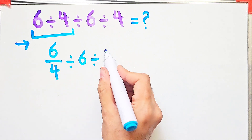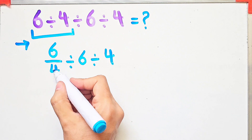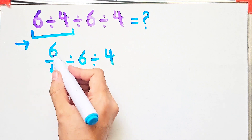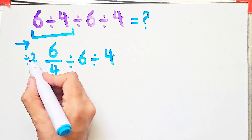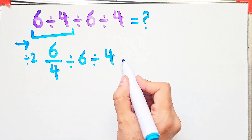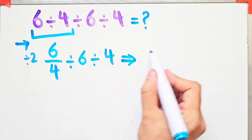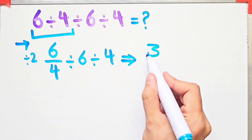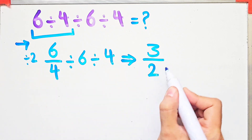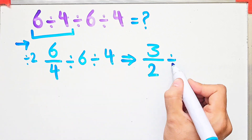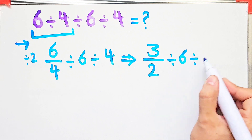Because the numerator and the denominator of this fraction are divisible by two, we divide both by two. Six divided by two equals three, and four divided by two equals two. We have three over two, divided by six, then divided by four.